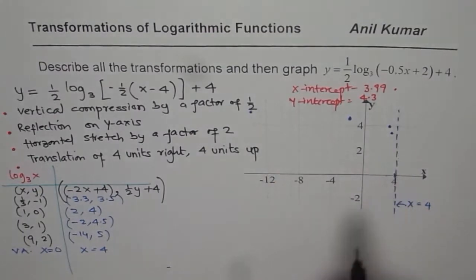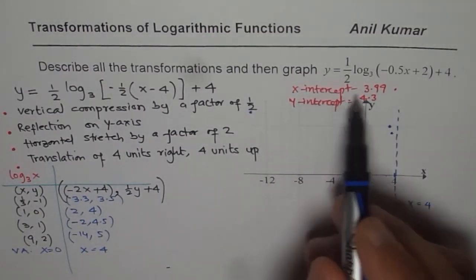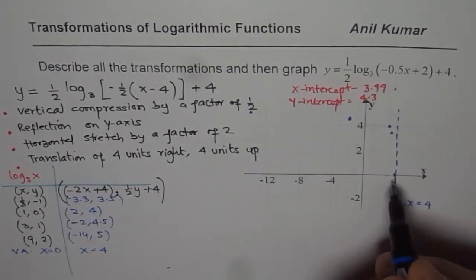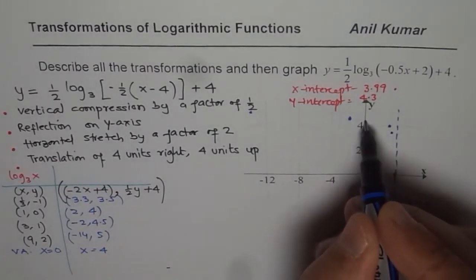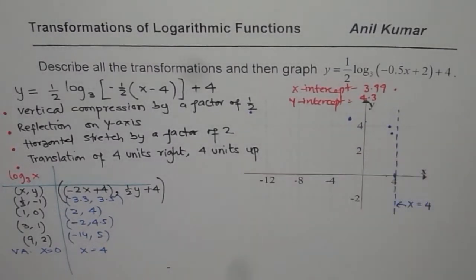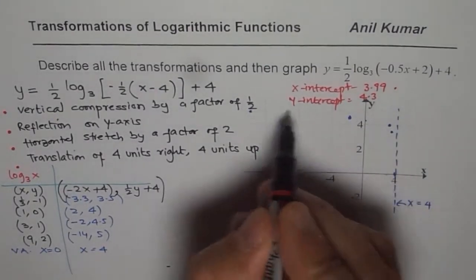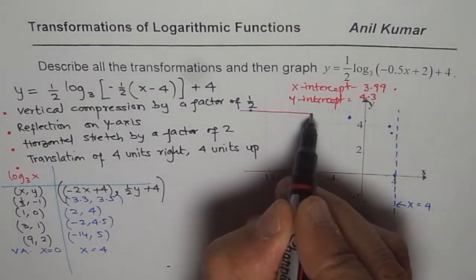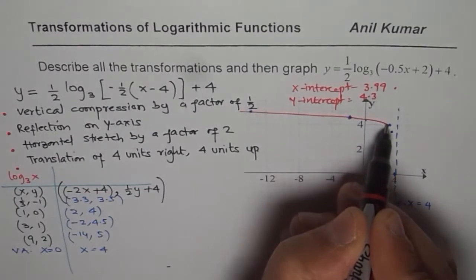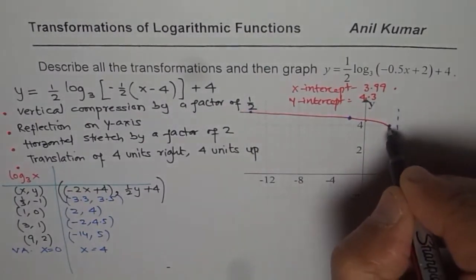Plus we also found that the x-intercept is extremely close to 4, and y-intercept is slightly more. So that actually works out. So let's join these points. So these points, if you join, like this, kind of. Do you see that, how I am joining them?